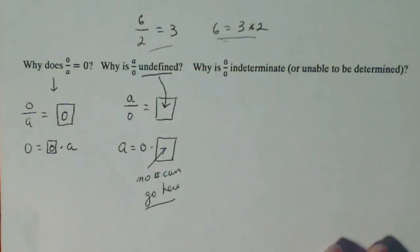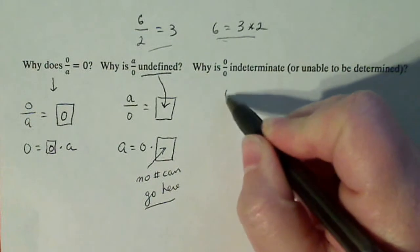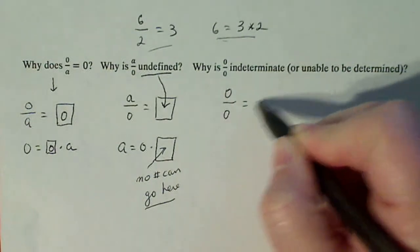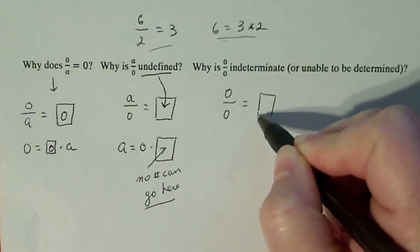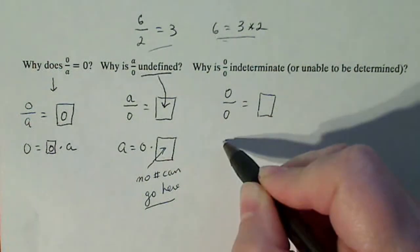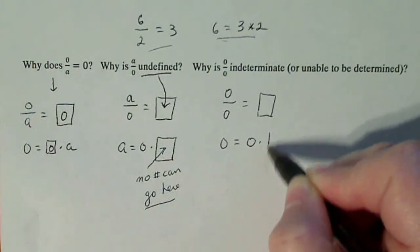Last but not least, why is 0 over 0 indeterminate? Or we can't determine which number it is. So last time, 0 over 0 equals box. Rewrite as multiplication: 0 equals 0 times box.